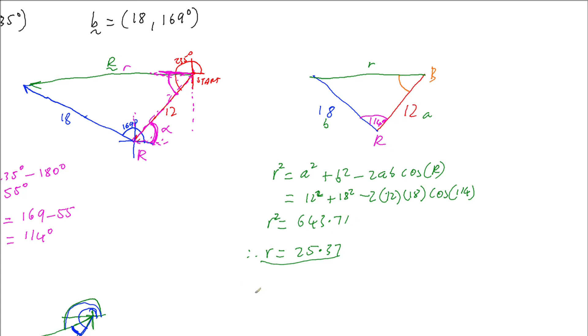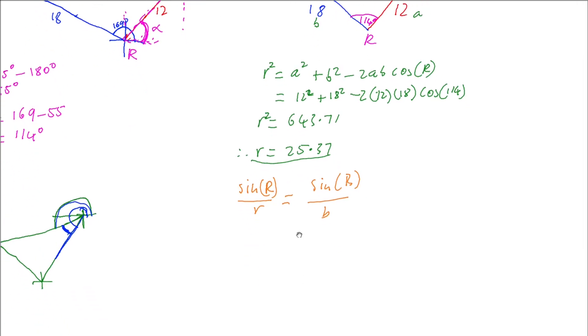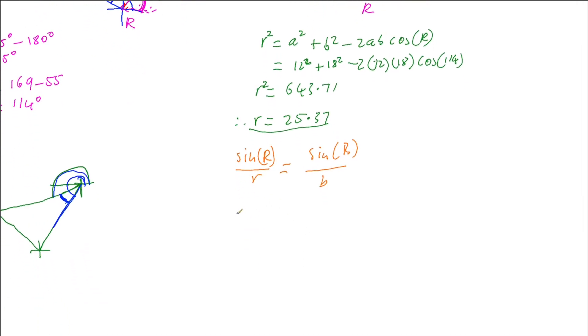And to do that, I'm going to use the sine rule. So we're going to have sine of angle R on little r equals sine of angle B on little b. And putting our numbers into this rule, that's going to give us sine of angle R which was 114 degrees on little r which we just worked that out, 25.37 on sine B which we don't know, we're trying to work out, on little b which was 18.